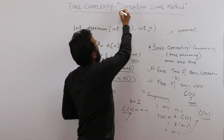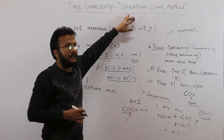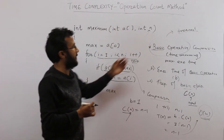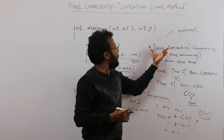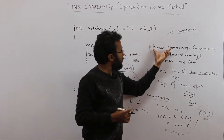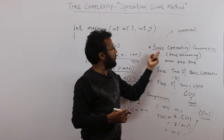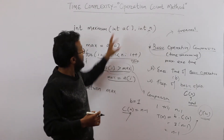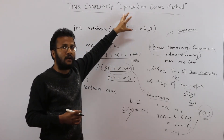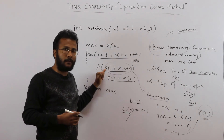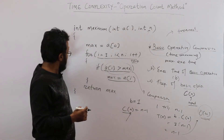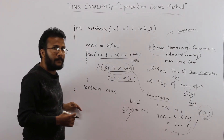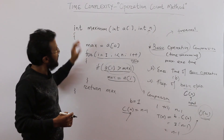The success of the operation count method depends on how well you select your basic operation. Your capability of selecting the correct basic operation decides the time complexity result. One drawback of this method is that we do not consider the time contributed by each and every step.